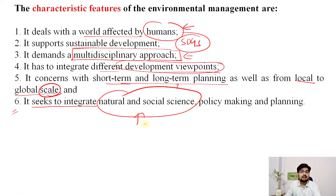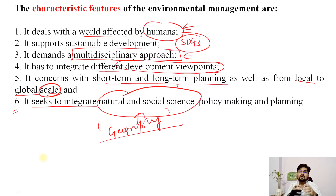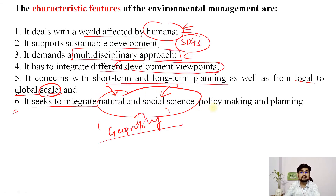Environmental management seeks to integrate natural and social science together, and that is where geography as a discipline becomes really important. Geography is the only discipline that has both science and humanities combined and fused together — physical and human geography fused together. This dialectic nature of geography makes it very suitable for environmental management planning. If you want to manage your environment well, you must have knowledge of geography, integrating natural sciences and social sciences, to make policy, planning, and execute it.